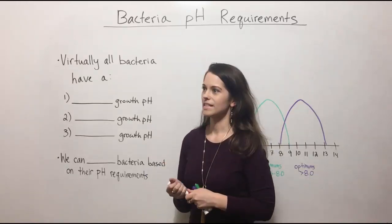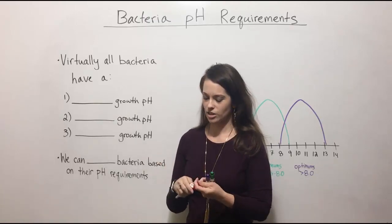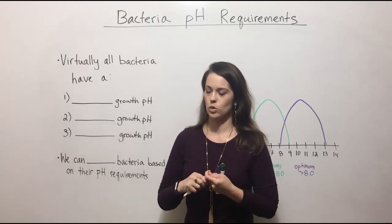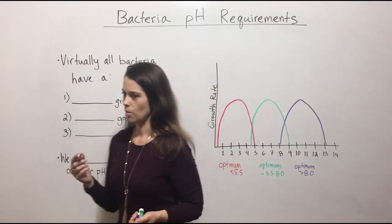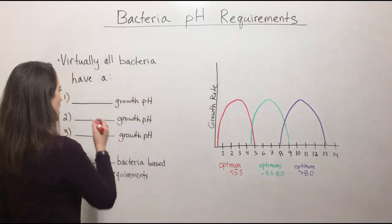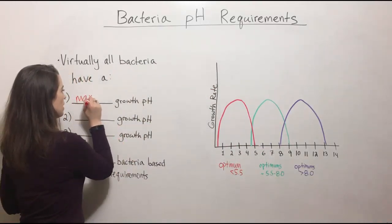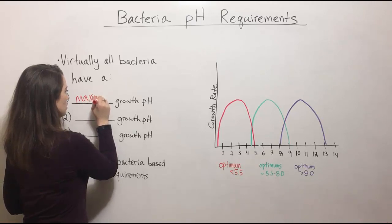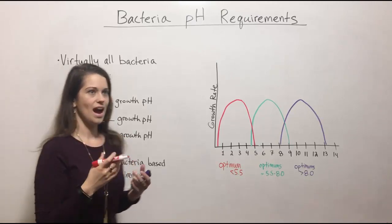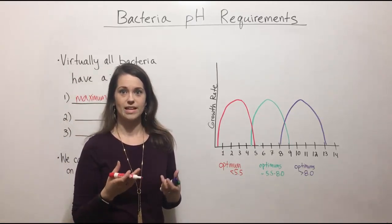Virtually all bacteria are subject to various pH requirements. What we mean by this is that all bacteria have some kind of maximum growth pH and this refers to the highest pH at which they can still grow.